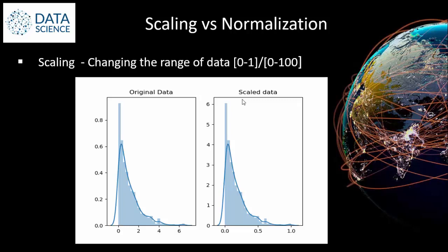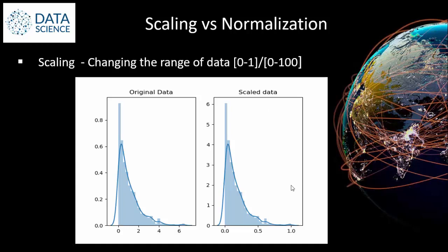Scaling means changing the range of data. In this graph you can see the values range from 0 to 10, and this original data is converted to scaled data. All these values are converted to a 0 to 1 scale. We have to change the range of data, and this range can be between 0 to 1 or in some cases between 0 to 100. This is how we scale it.